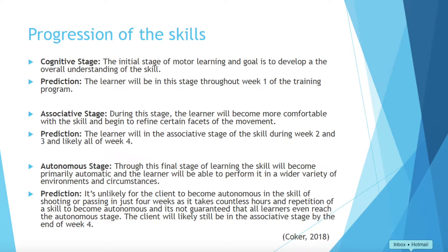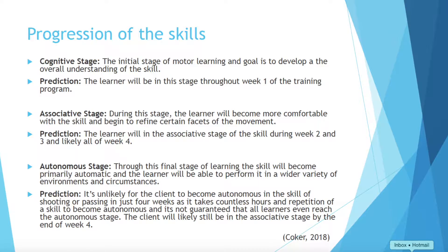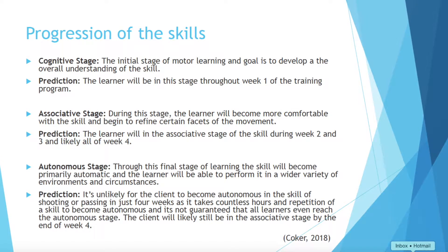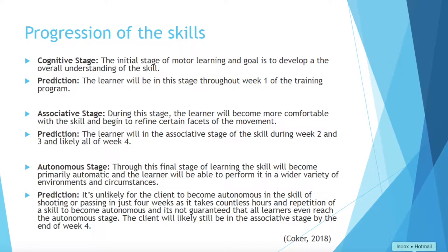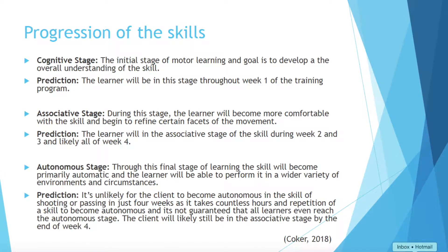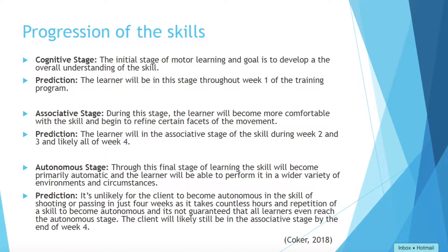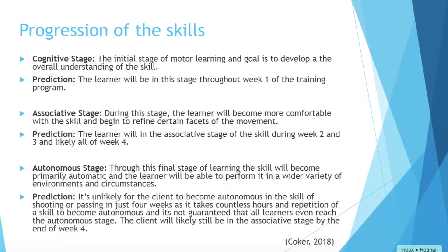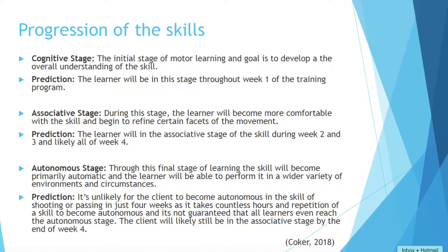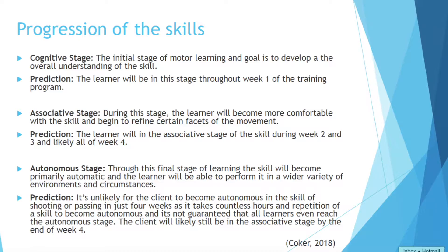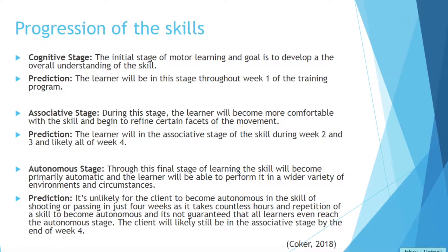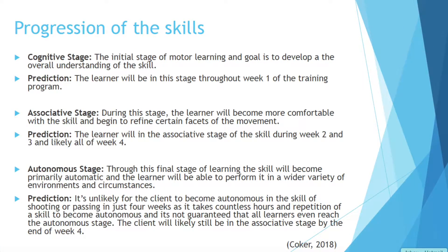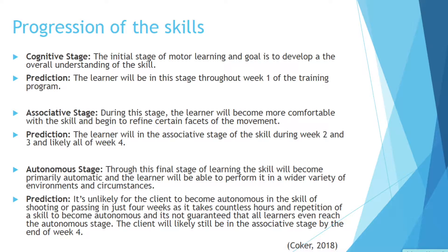In the cognitive stage — the initial stage of motor learning — the goal is to develop our overall understanding of the skill. Our prediction is that the learner will be in this stage throughout all of week 1 of the program. In the associative stage, the learner will become more comfortable with the skill and be able to refine certain facets of the movement. We predict the learner will be in the associative stage during weeks 2, 3, and likely week 4.